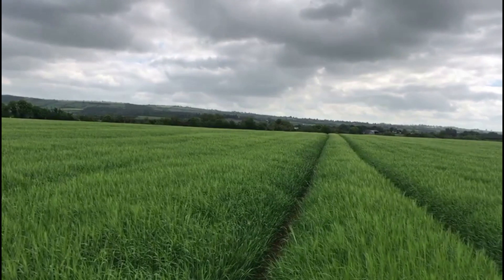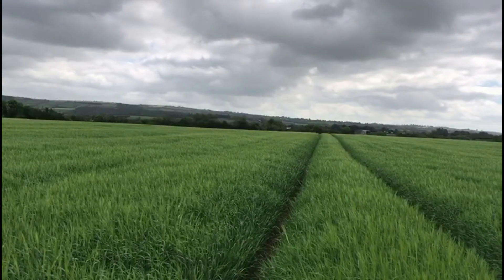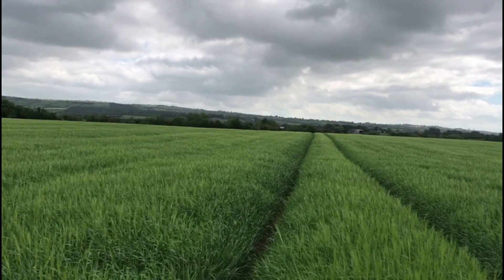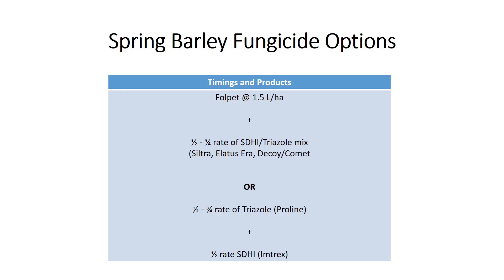The products to use at this timing should include a mix of SDHI and triazole chemistry at a half to three-quarters rate. The rate will depend on the variety that is to be treated and also the disease pressure within the field. Products that can be used would include Siltra, Elatacera, or the Chioperioxar packs.